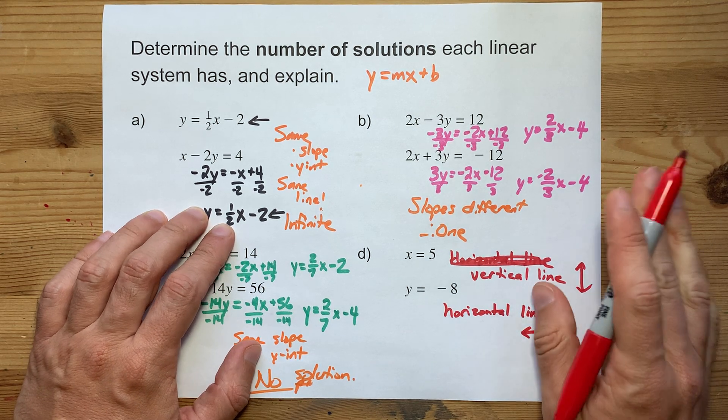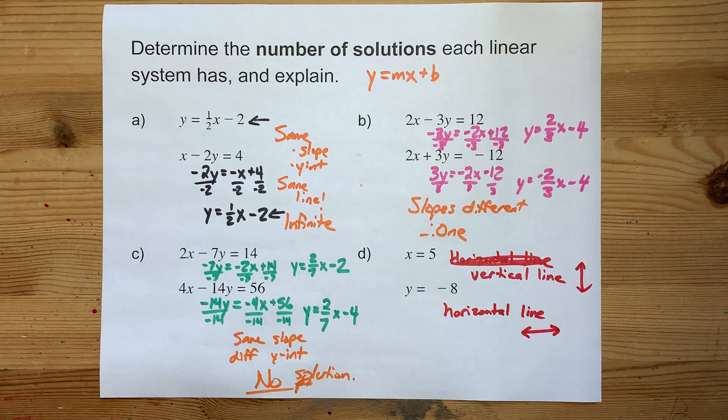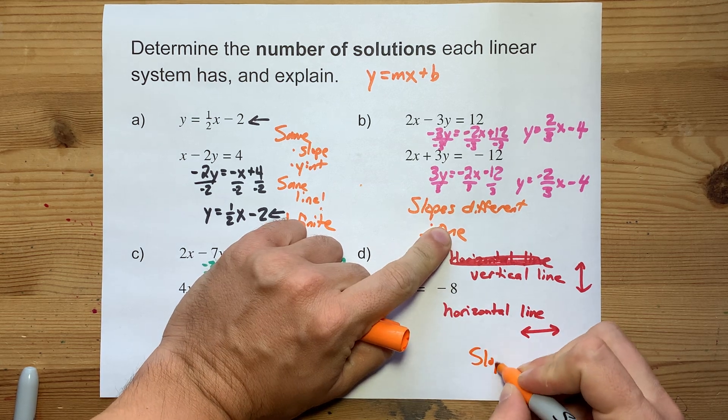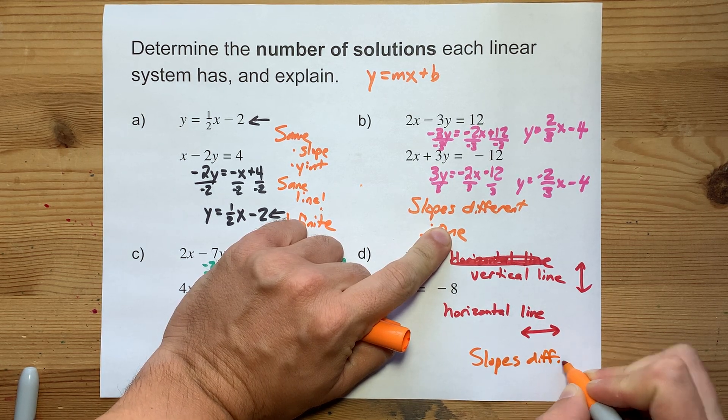The slope here was 0. Those are different slopes. And therefore, just like happened here, there is exactly one point of intersection.